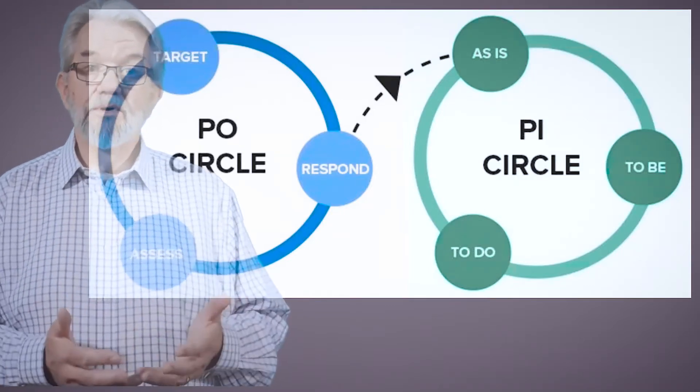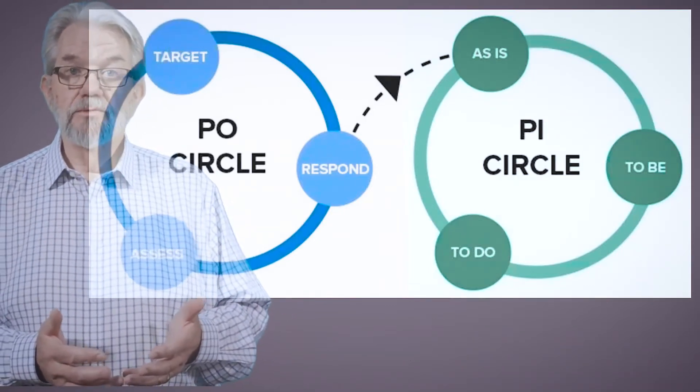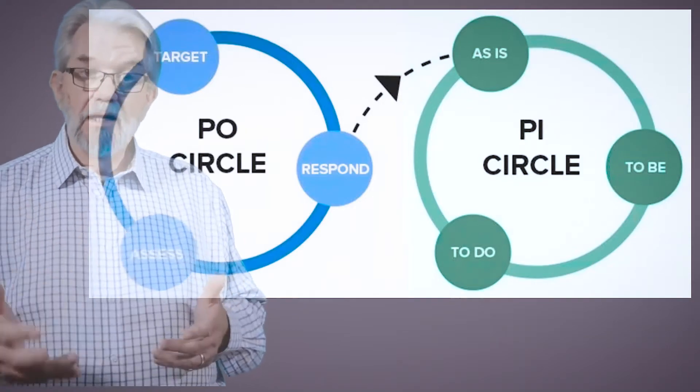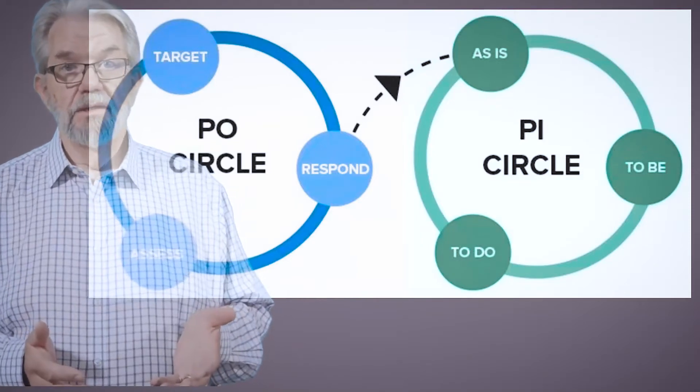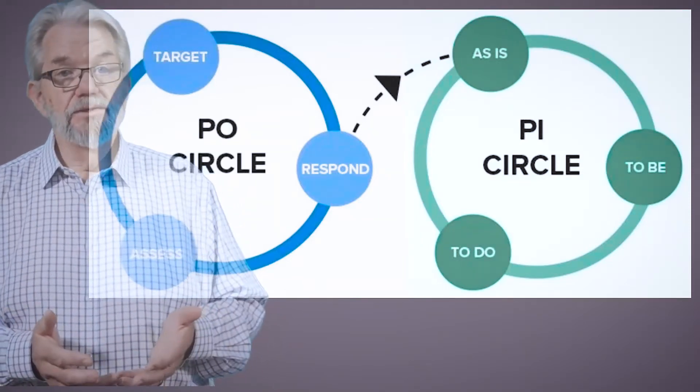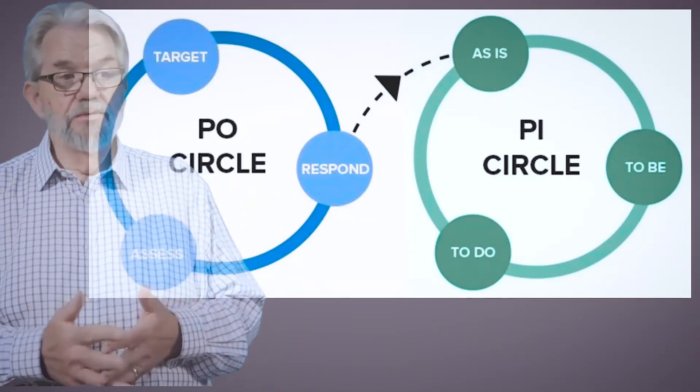And then the PI or Process Improvement circle is the way in which we'll look at a process, analyze it, come up with changes, improvements, and make sure those changes get made. So this is the process improvement circle, anybody's process improvement method.